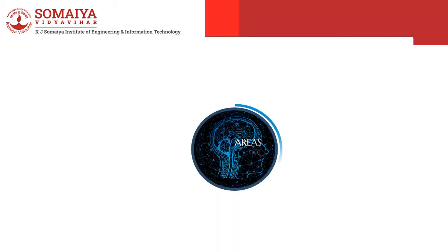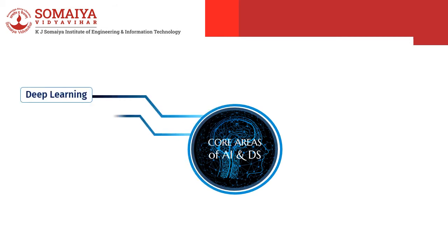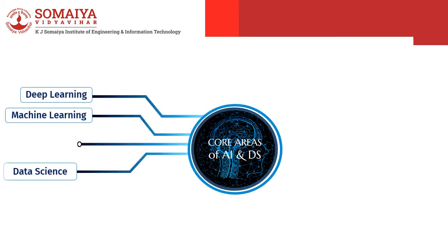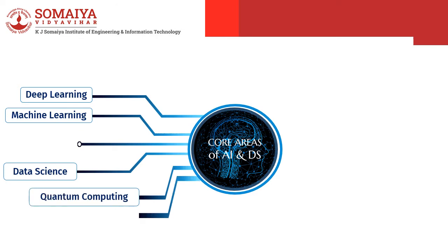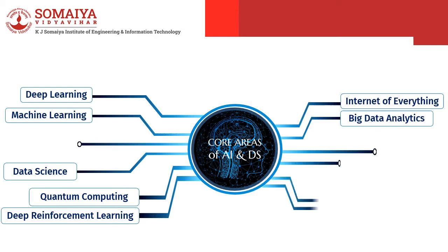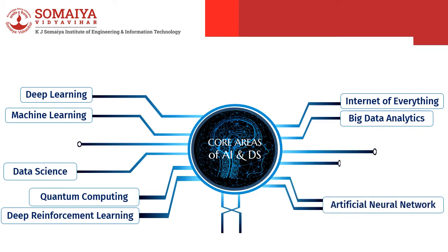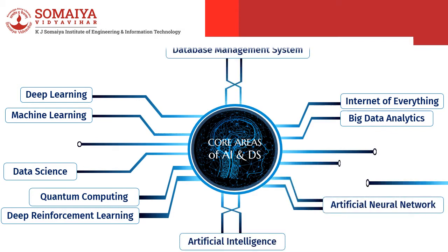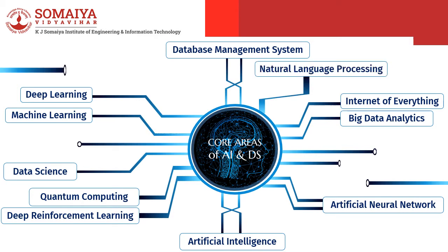The core areas of AI and DS include Deep Learning, Machine Learning, Data Science, Quantum Computing, Deep Reinforcement Learning, Internet of Everything, Big Data Analytics, Artificial Neural Networks, Artificial Intelligence, Database Management Systems, and Natural Language Processing.